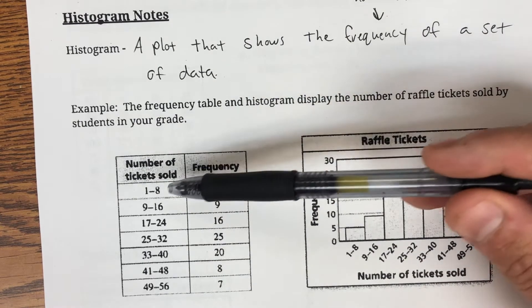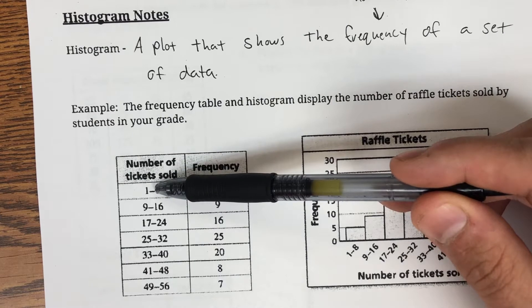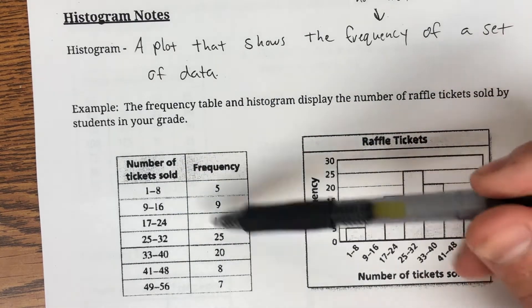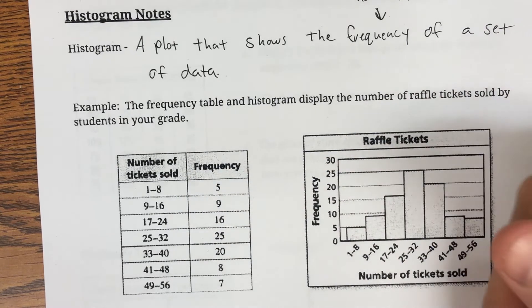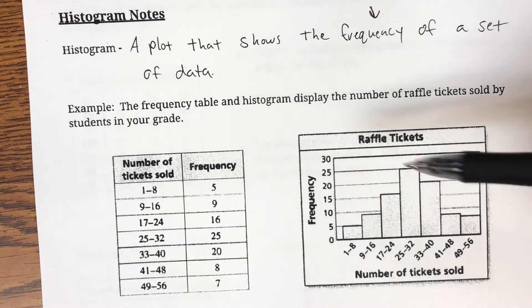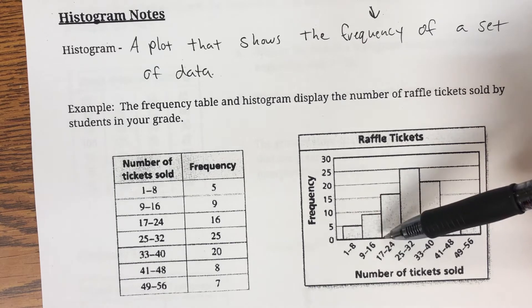Now, as we look at this way that the data is aligned, we had 1 through 8 and then 9 to 16, and each time it's going up by 8. So when we take a look here, it needs to be an even distribution as it's going up by 8.